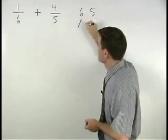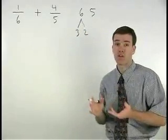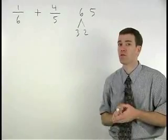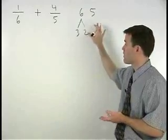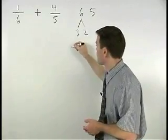Six factors as three times two, and five doesn't factor. Remember, when finding the least common multiple, we're looking for factors that match up. And here we have no factors that match up, so our least common multiple, or LCM,